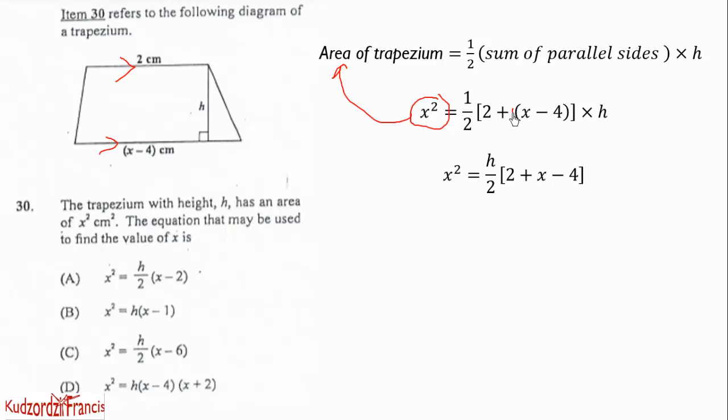Now we need to simplify this. I just expanded here. I assume that this is 1. So we expand, we get this. Now the next thing is to reorganize or rearrange. So 2 minus 4, that will give you negative 4. So I use the h to multiply the 1 here to get this. So we have x squared equal to h over 2, and that will give you something like this. And this can be rewritten as h over 2 into x minus 2. Therefore, the correct choice is x squared equal to h over 2 into x minus 2. Option A is the correct answer.